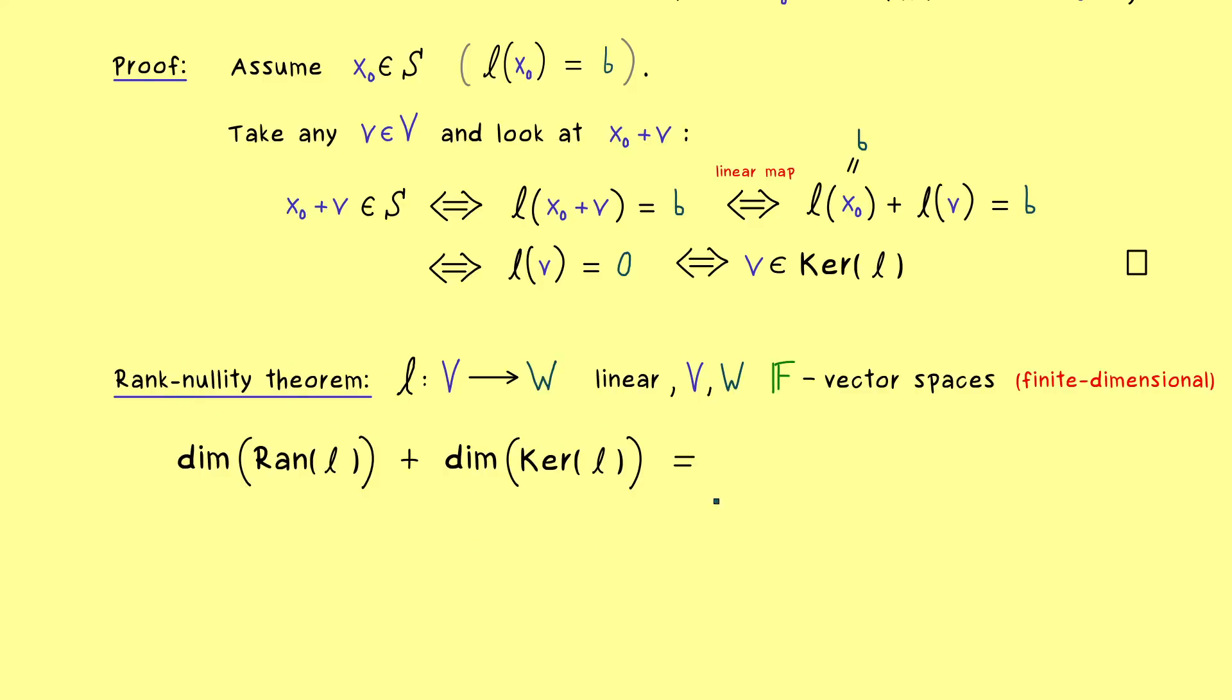So this already explains the name of the theorem and now the claim is that both dimensions added gives us the dimension of the space we put in. Hence, in our case it's simply the dimension of the vector space V. Okay, so this is the famous rank-nullity theorem for linear maps and you definitely should remember that. And moreover, the proof is really simple because we can just use matrix representations.